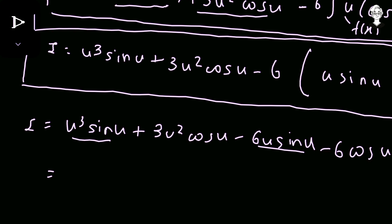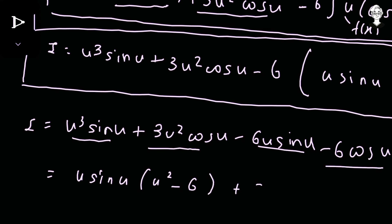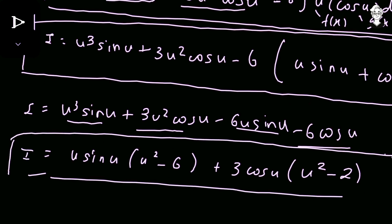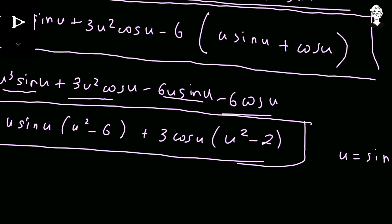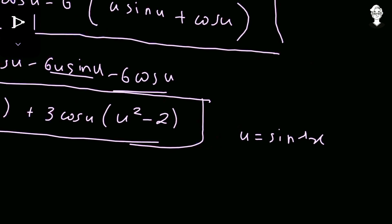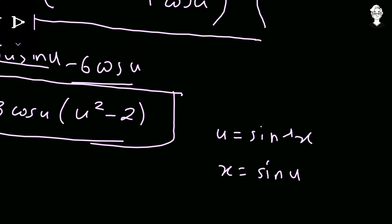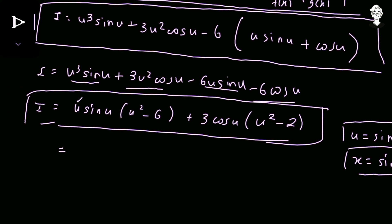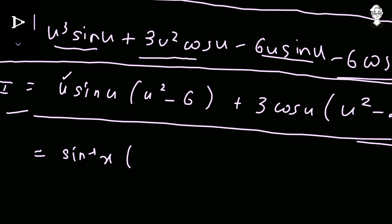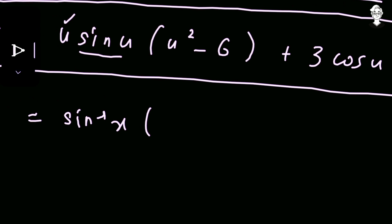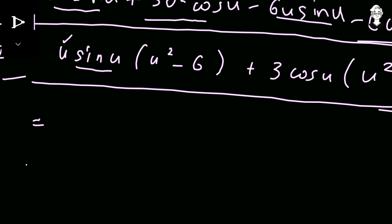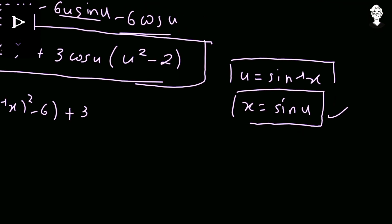Expanding and grouping terms: the sine terms and cosine terms are collected separately. Taking common factors, I equals sin u times (u³ minus 6u) plus 3 cos u times (u² minus 2). Now we replace u with sin inverse x. Since u equals sin inverse x, we have sin u equals x, so the sin u factor gives x times (sin⁻¹x)² − 6) times sin⁻¹x, simplifying to x·sin⁻¹x·((sin⁻¹x)² − 6).